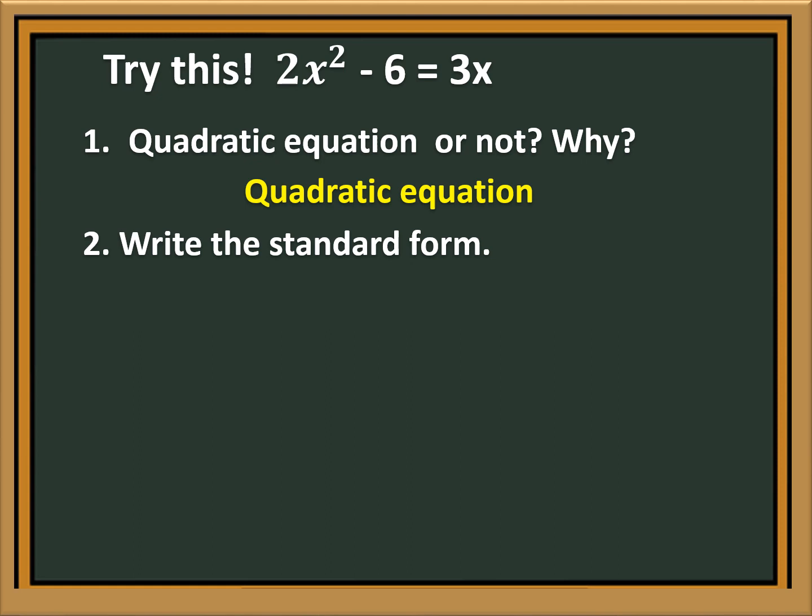Number 2: Write the standard form. 2X squared minus 6 is equal to 3X. First transpose 3X to the left side of the equation, so it will become negative 3X.